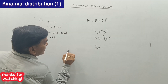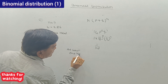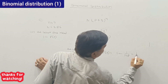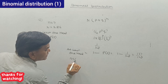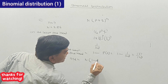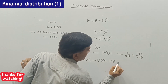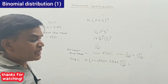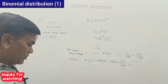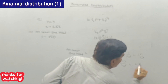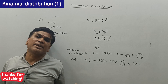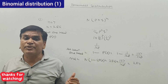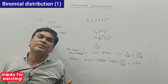At least 1 head = 1 − 1/128 = 127/128. Multiplied by 256, that gives 127 × 2 = 254. So without any hesitation we can calculate whatever the question is asking when binomial theorem is involved.